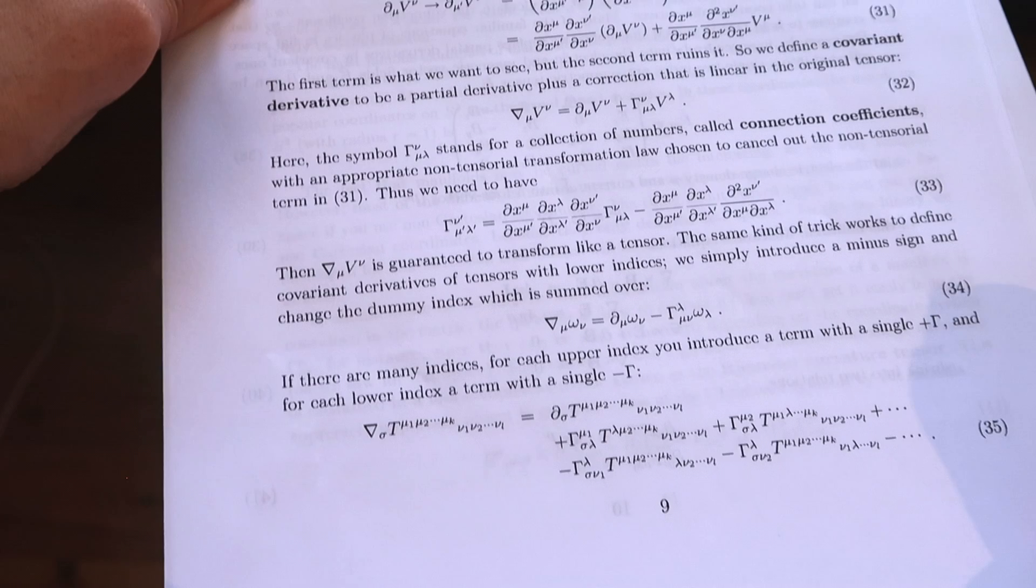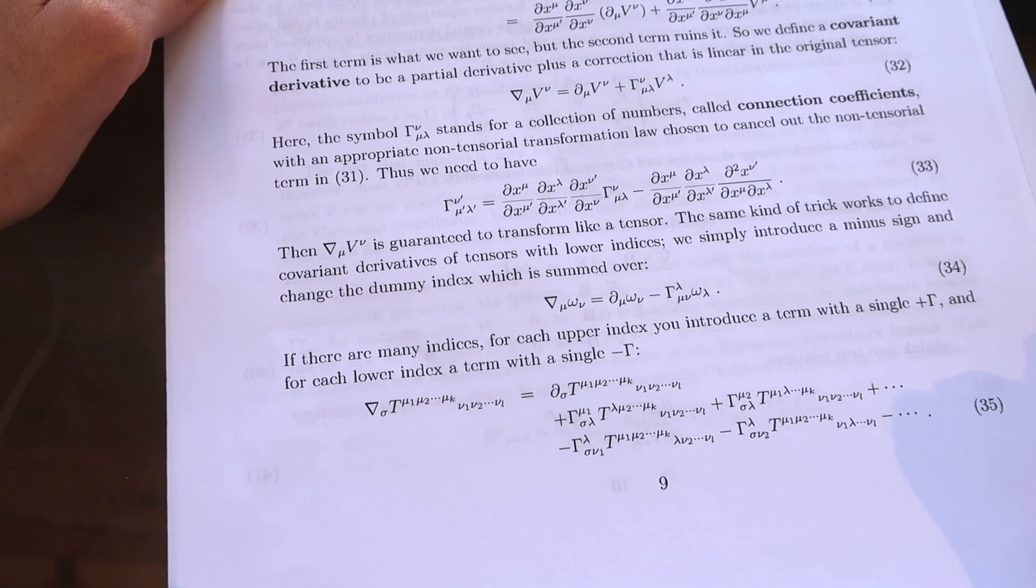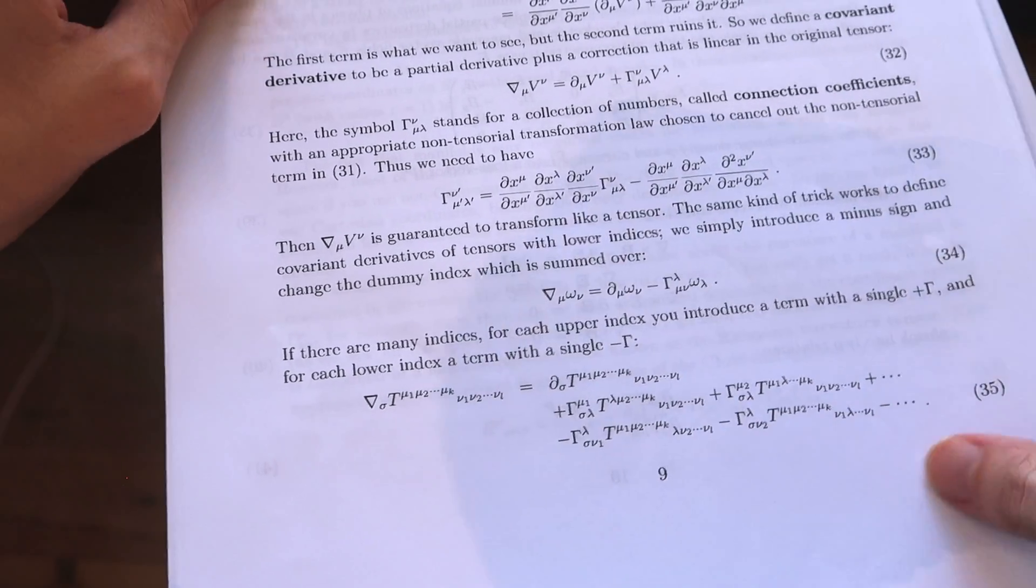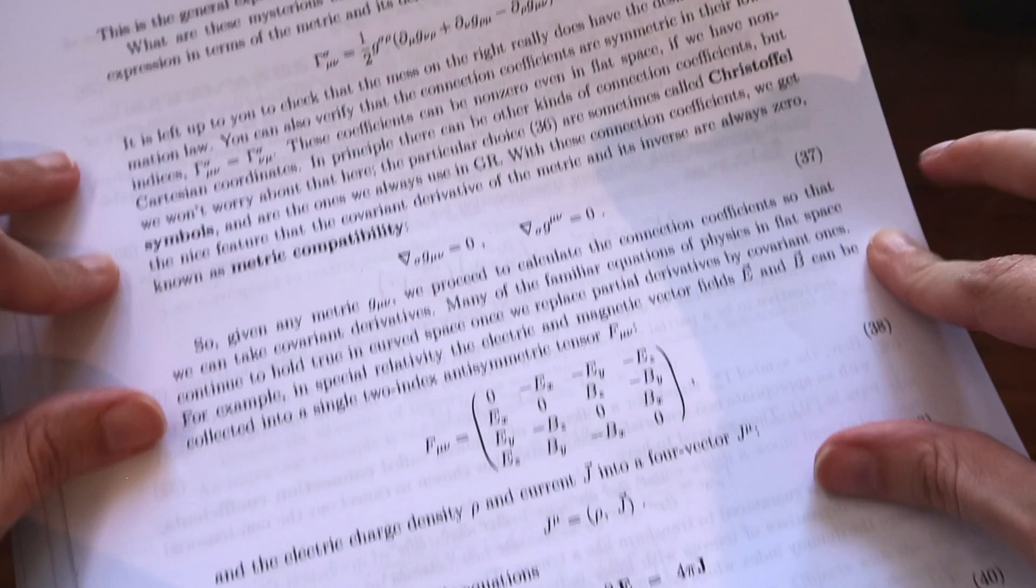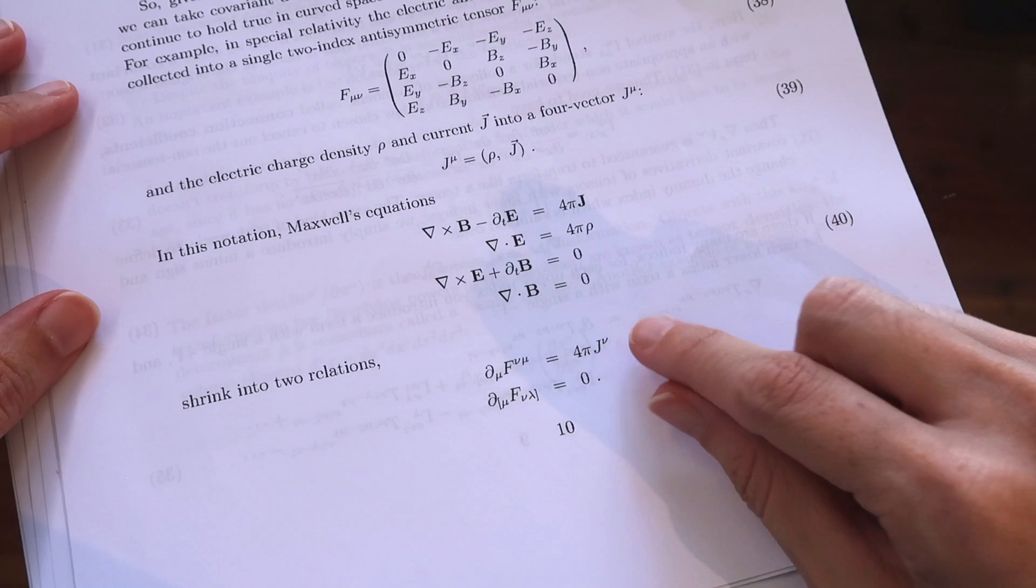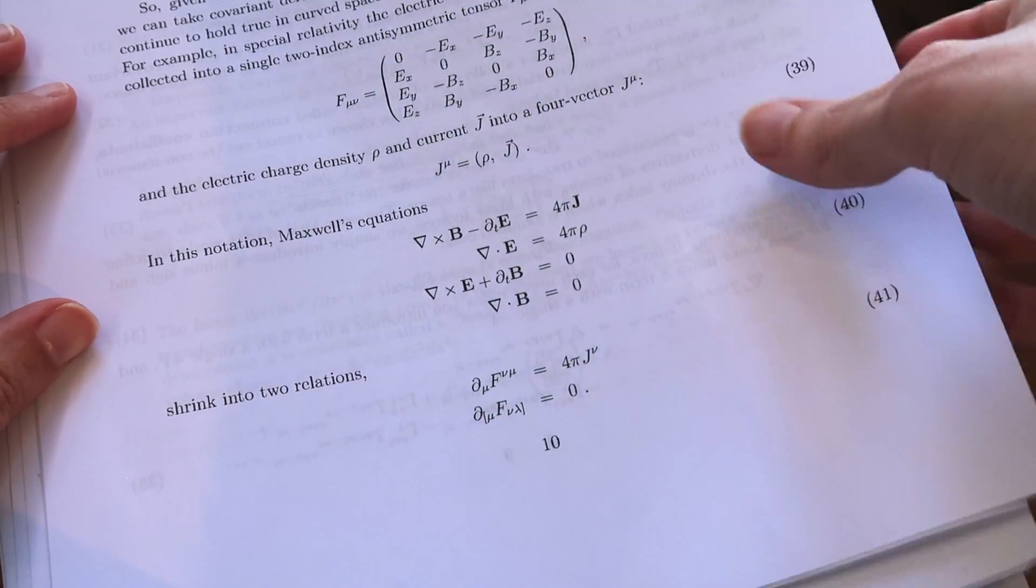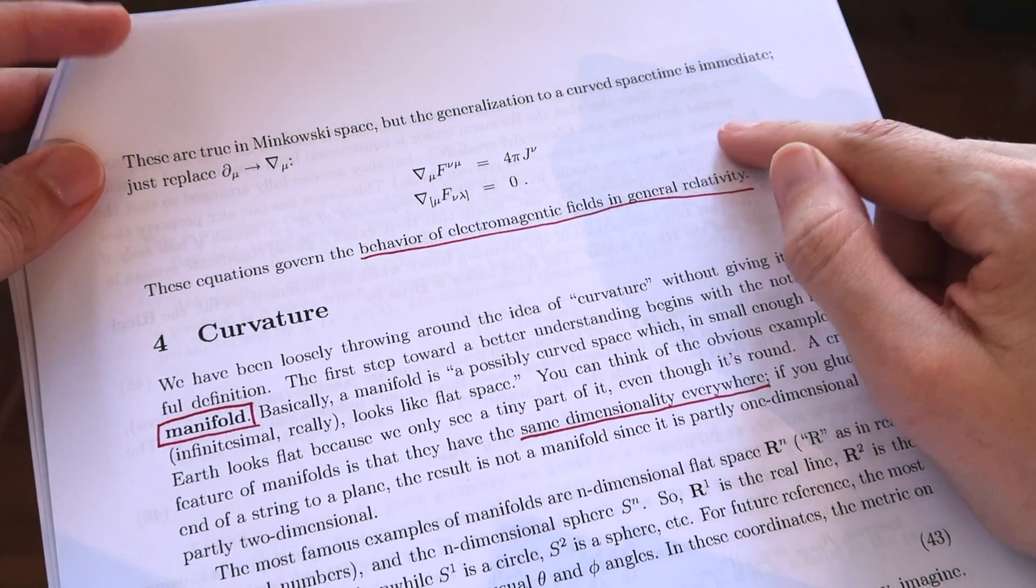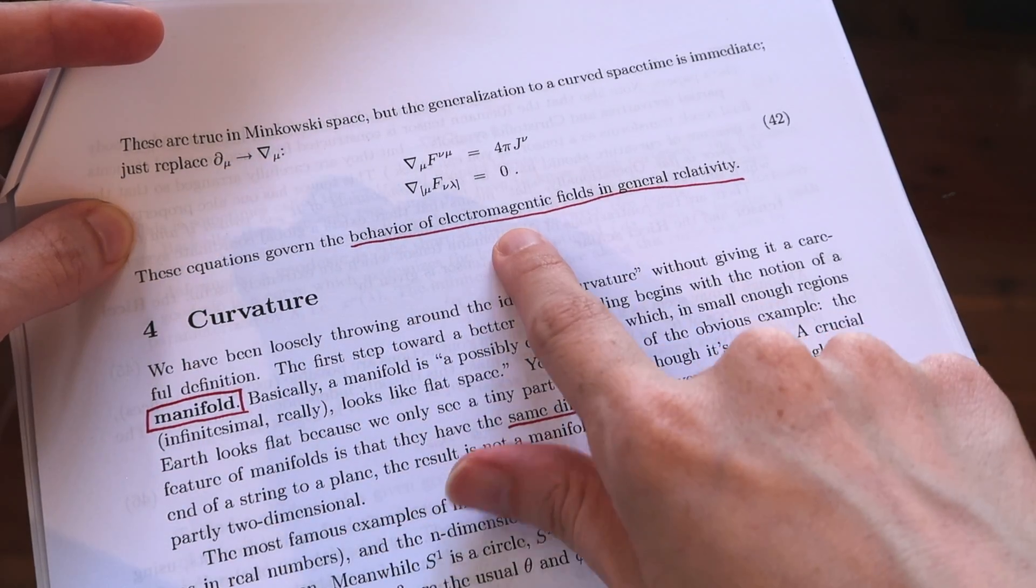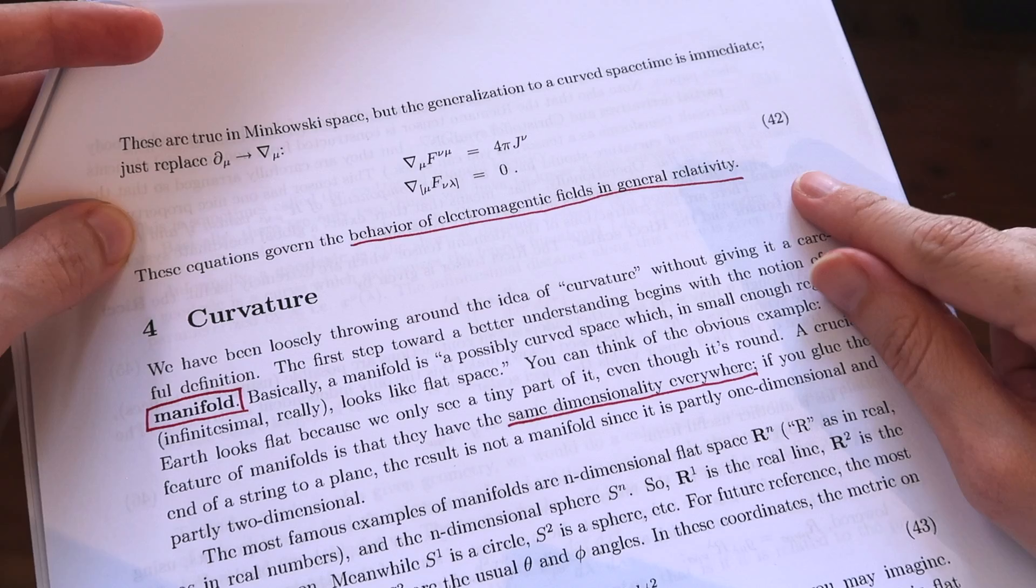It's a difficult topic and I don't have much time to really explain tensors more but we'll just have a little click through the pages so at least you can see what we're dealing with. On this page tensors are used to shrink Maxwell's equations into just two relations which generalize to curved space-time and are the equations which govern the behavior of electromagnetic fields in general relativity.